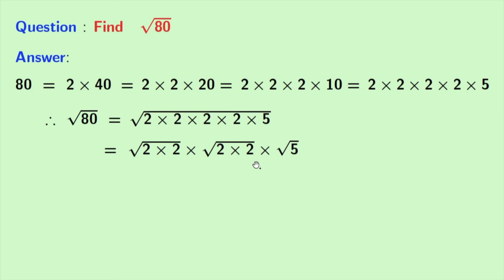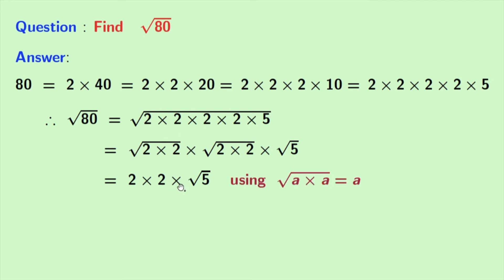From the first square root we can take 2, and from the second square root again we can take 2, as we know that the square root of a times a is equal to a — here a is 2. The third square root, that is root 5, remains the same. Now let's multiply it, and doing that we have 4 root 5, and this is our answer.